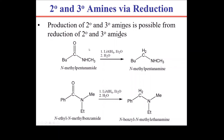You can make secondary and tertiary amines as well. These are typically done by reducing amides — an amide is a carbonyl group next to a nitrogen, much like a carboxylic acid is a carbonyl group next to an alcohol. This reduction uses lithium aluminum hydride, giving you your amine. Here is a secondary amide becoming a secondary amine, and a tertiary amide becoming a tertiary amine.